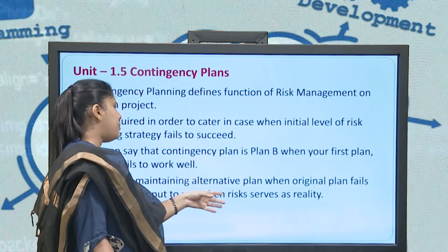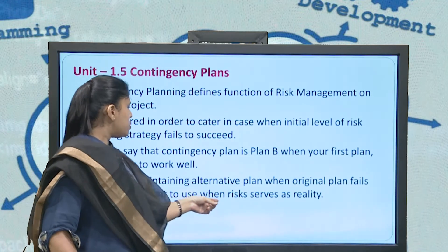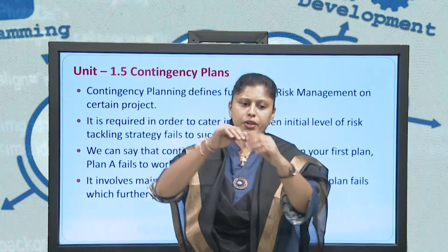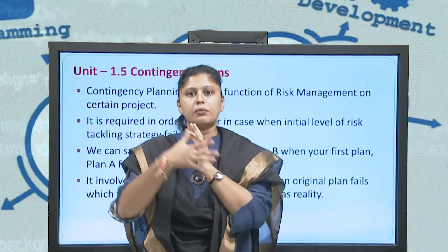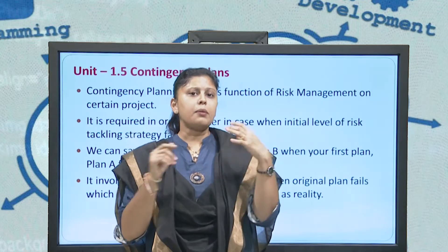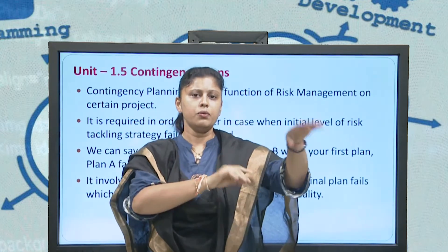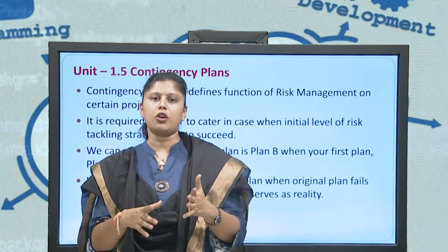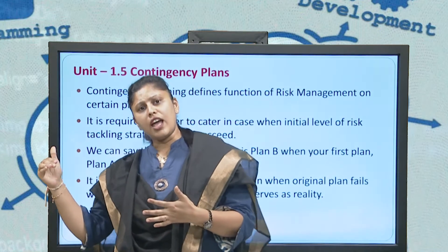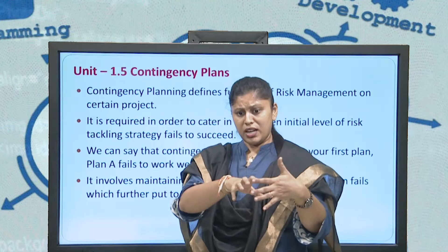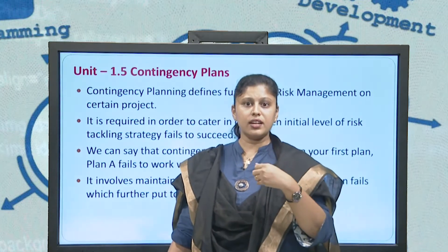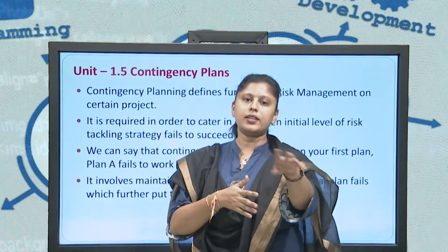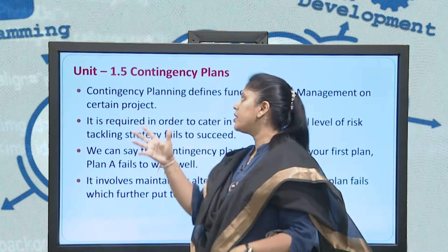A contingency plan involves maintaining an alternative plan when the original plan fails, which is put to use when risk becomes reality. For example, if you are traveling from Rajkot to Ahmedabad via Chotila and Limbri — plan A — but that route is under construction, you take an alternate route via Surendranagar instead. When plan A fails, you use the alternate route to avoid that risk — that is plan B, the contingency plan.